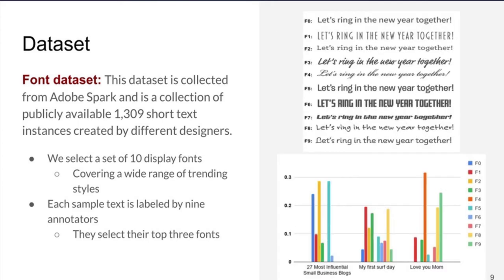Here I am showing three examples from our dataset with label distributions over 10 fonts. By comparing the label distributions of these examples, we can observe formal fonts like F0, F2, and F5 are often selected in the business context, like the example on the left. And script fonts like F4, F8, and F9 are preferred for emotional context, like what we have on the right.